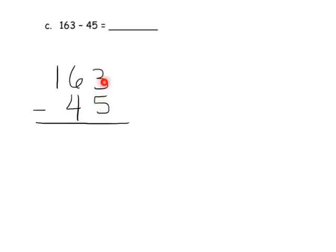Since we need to unbundle, we're going to take one of the tens — leaving five tens left over — and we're going to get ten ones for that ten that we're unbundling. Instead of having three ones, we're now going to have thirteen ones, because when we unbundle a ten we get ten ones.